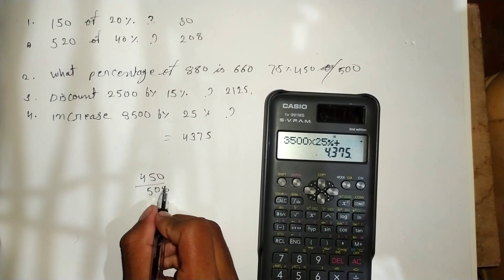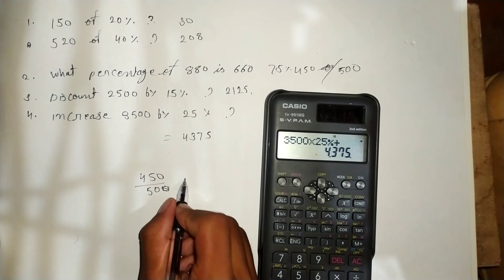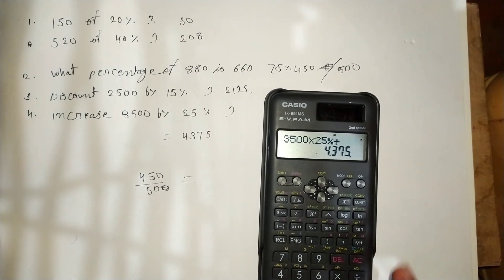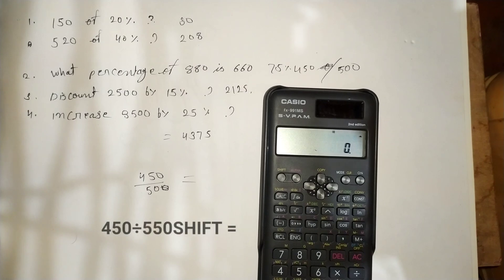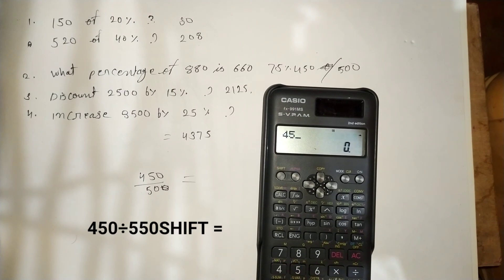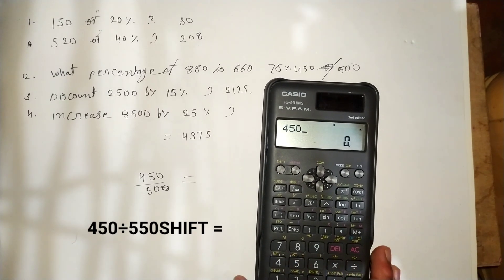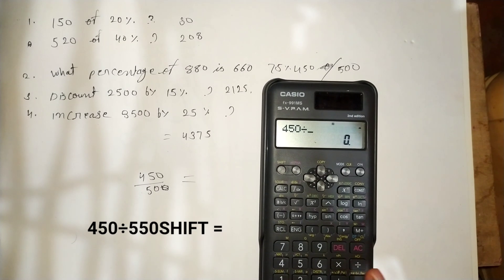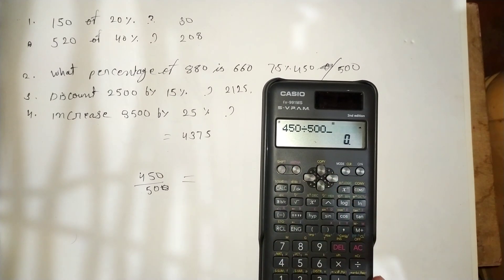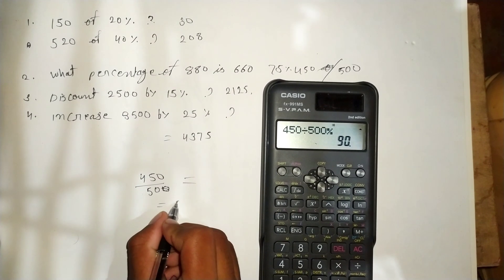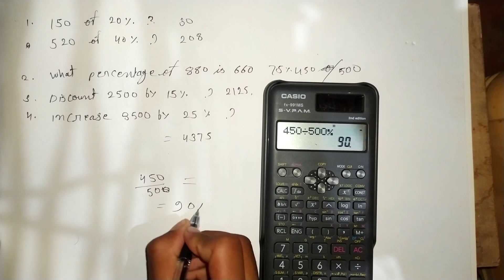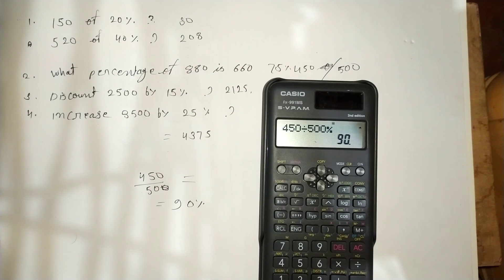Suppose in any exam you get 450 marks out of 500 — you know how to calculate the percentage. Press 450 divided by 500, then press Shift and Equals. We get 90 percent.